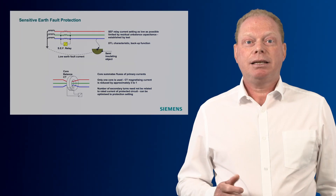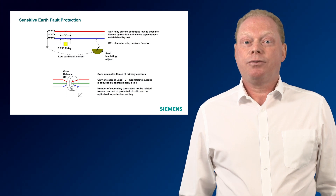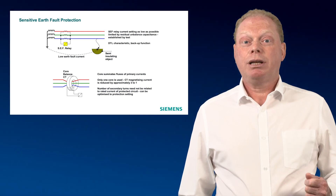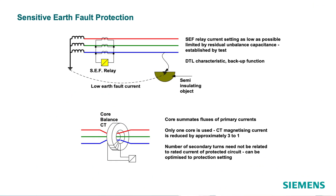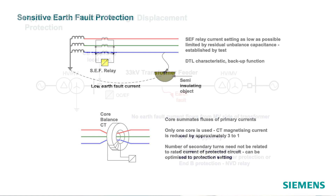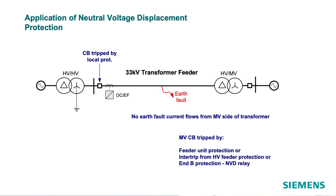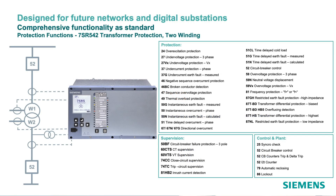Depending on the network earthing arrangement, this may mean there are low current levels for earth faults. Sensitive earth fault relays can be used to detect these earth faults either through residual connected CTs or a core balance CT. The RARO5 current transformer inputs have a wide range and can provide standard earth fault and sensitive earth fault on the same input. Also for a typical transformer feeder, the RARO5 provides neutral voltage displacement to enable remote end tripping so no additional equipment is required.